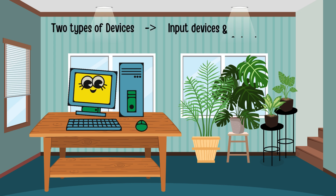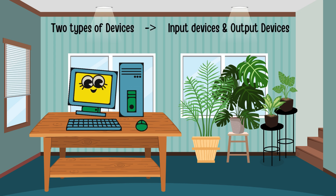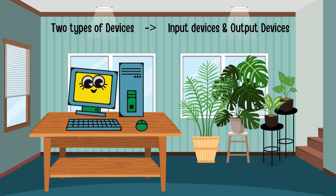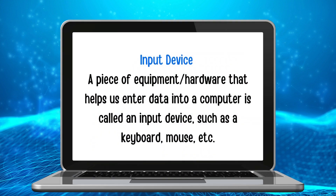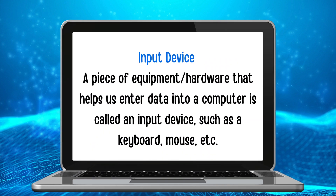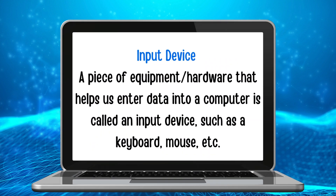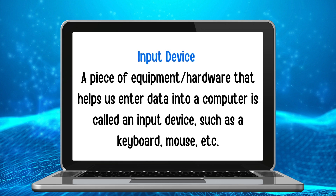A computer has two types of devices: input devices and output devices. A piece of hardware that helps us enter data into a computer is called an input device. For example, a keyboard, mouse, etc.